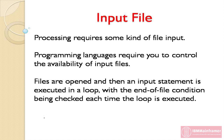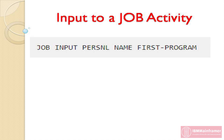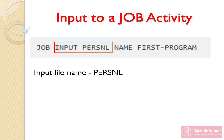Usually, files are opened and then an input statement is executed in a loop, with the end-of-file condition being checked each time the loop is executed. Although you can control input, EasyTrieve can also provide automatic input capability. The input parameter of the job statement indicates that the named file, PERSNL in our example, should be made automatically available to your program. It is like saying, I want to use this file, and letting EasyTrieve do the necessary steps.